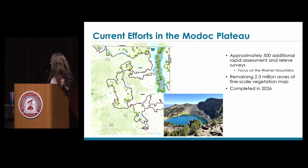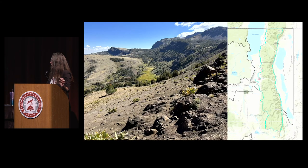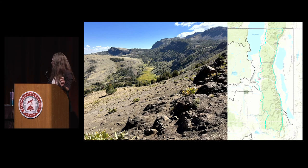We worked with Chico State to gather 500 additional surveys and are expecting to complete the updated classification and mapping in 2026. We're focusing on vegetation types identified in the Warner Mountains, which run north-south with their highest elevation at Eagle Peak, 9,894 feet. The geology here is volcanic in nature as well.